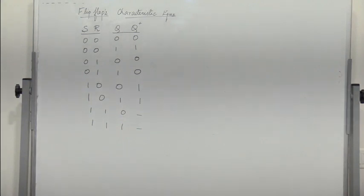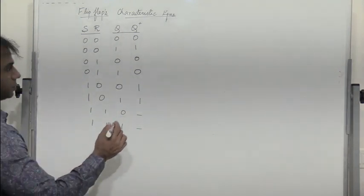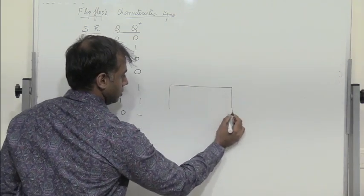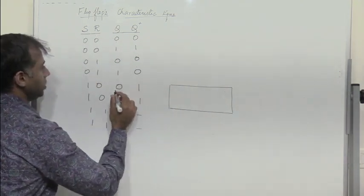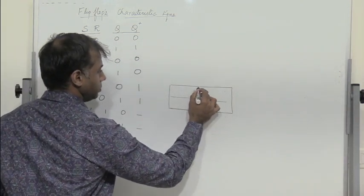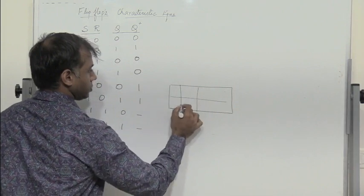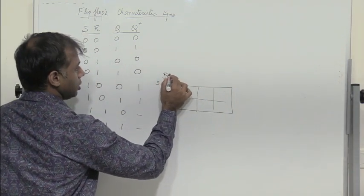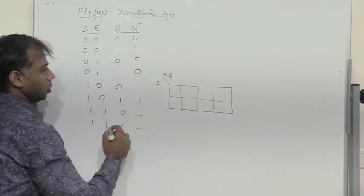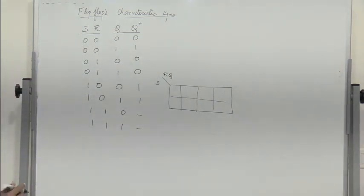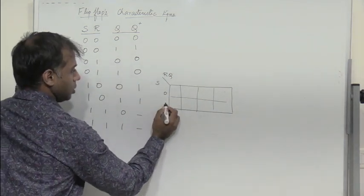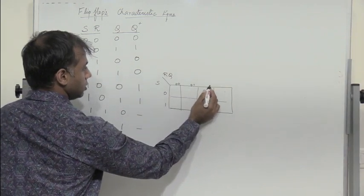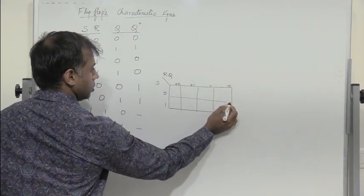So let us find the characteristic equation. There are three input variables: S, R, and Q, and the output is Q+. The K-map entries are: 0, 1, 0, 0, 0, 1, 1, 1, 1, 0 for the respective combinations.